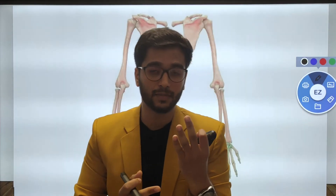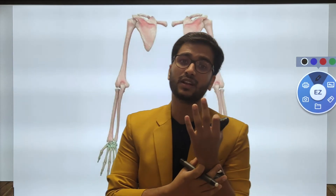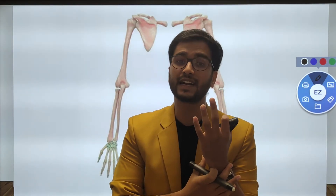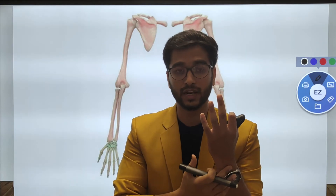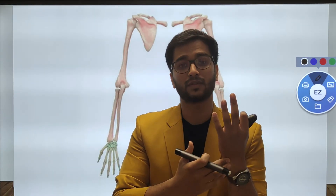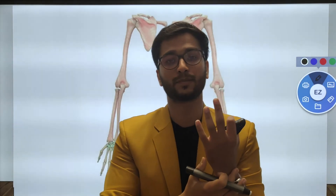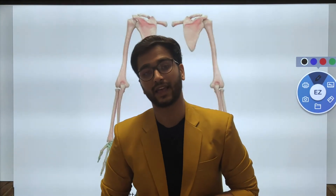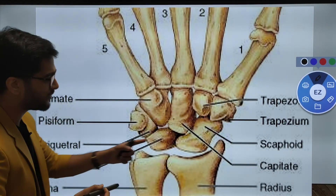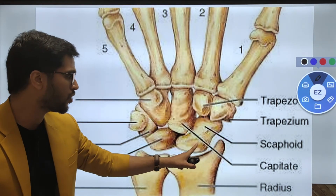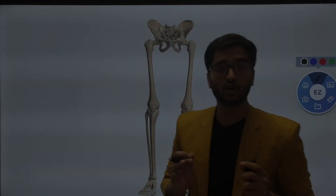The 8 carpals are present in 2 rows — proximal and distal. Starting from the proximal row on the lateral side and going clockwise, the bones are: scaphoid, lunate, triquetral. Then pisiform, hamate, capitate, trapezoid, and trapezium. Let's look at the lower limb now.